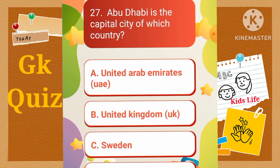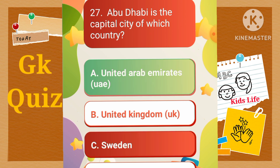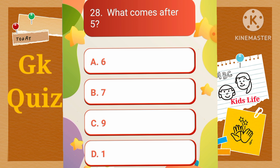Abu Dhabi is the capital city of which country? A) United Arab Emirates (UAE), B) United Kingdom (UK), C) Sweden, D) South Africa. What comes after 5? A) 6, B) 7, C) 9, D) 1.